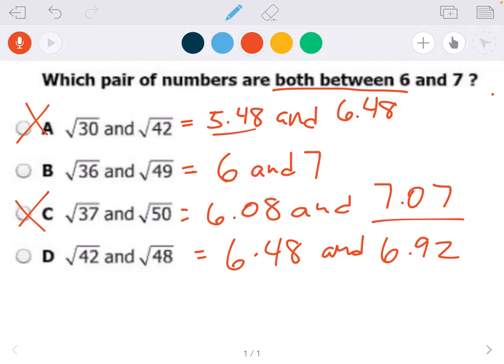So the correct answer here is D, because both of those square roots, you can see it obviously with these decimals, they're both between 6 and 7, so the answer should be 42 and 48.